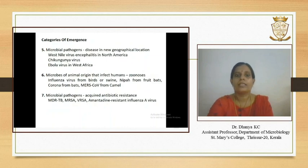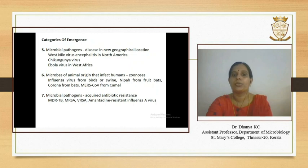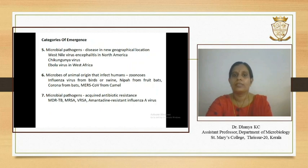Category 5 includes microbial pathogens that cause disease in a new geographical location. Examples include West Nile virus, Chikungunya virus, Dengue virus, and Ebola virus.